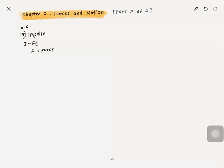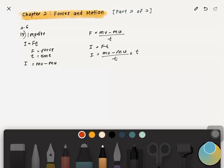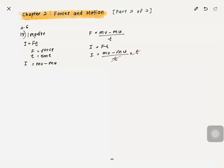Impulse is equal to F×t, where F is the force and t is the time interval. Impulse also equals mv minus mu. You can derive this from the formula for impulsive force: impulsive force = (mv − mu)/t. Since impulse I = F×t, substituting gives I = (mv − mu)/t × t, and cancelling t gives I = mv − mu. Here, m is mass, v is final velocity, and u is initial velocity.